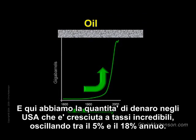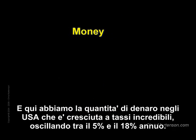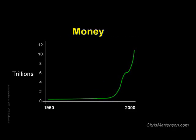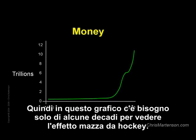And here's the U.S. money supply, which has been compounding at incredible rates ranging between 5% and 18% per year. So this chart only needs to be a few decades long to see this hockey stick effect.